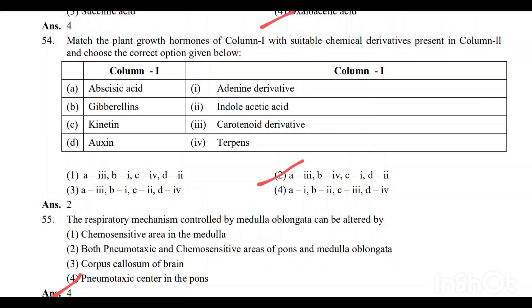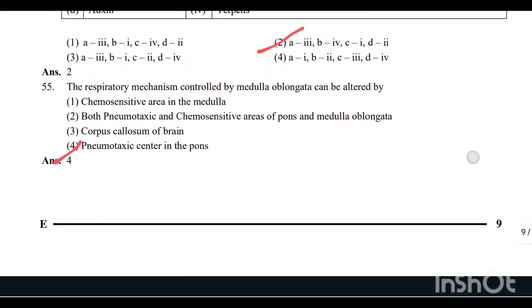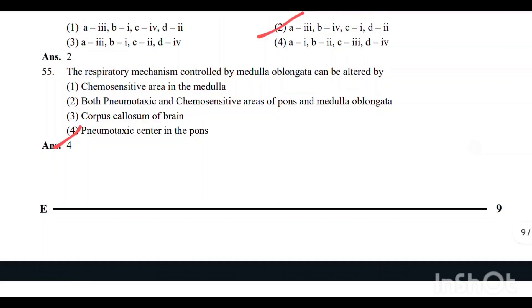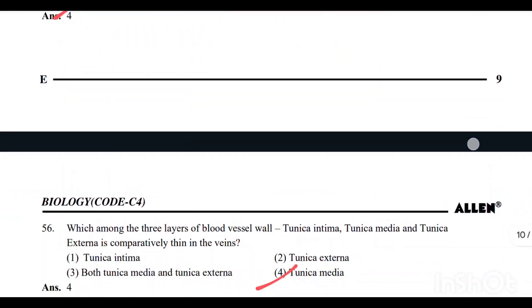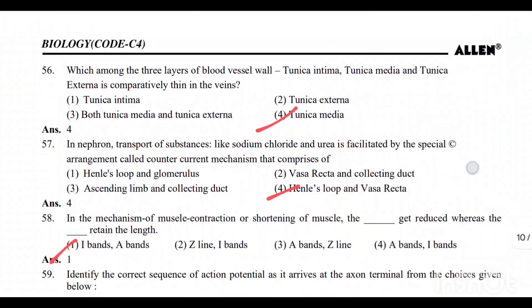Question number 55: The respiratory mechanism controlled by the medulla oblongata can be altered by the pneumotaxic center in the pons. Option 4 is the correct answer.